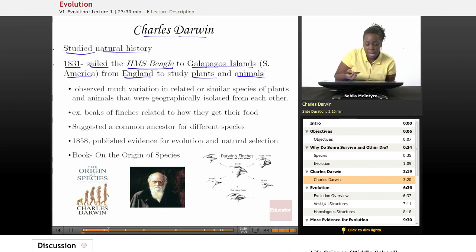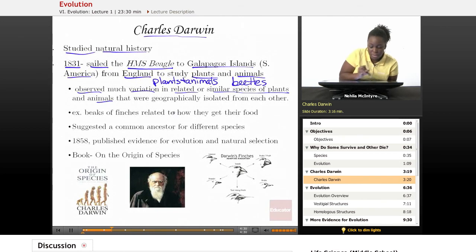Now prior to that, he was a scientist who used basically plants and animals such as the beetle. He had different collections. And what he did was he tried to find all the different variations of certain plants and animals. And he studied all the different variations of certain species to see how many different variations he could find. So he observed much variation in related or similar species of plants and animals that were geographically isolated from each other. That just means that they were not close to each other. So he wanted to see why those variations occurred.